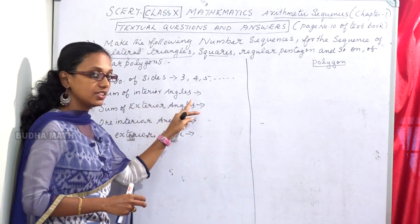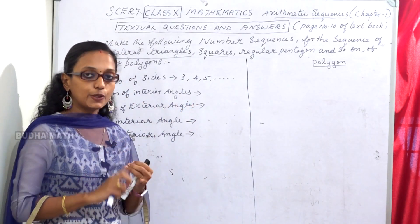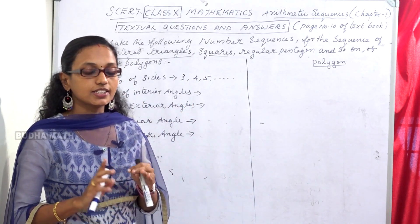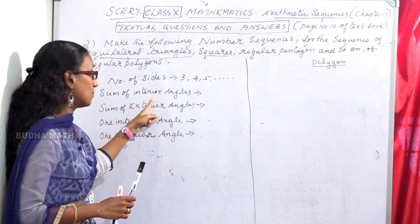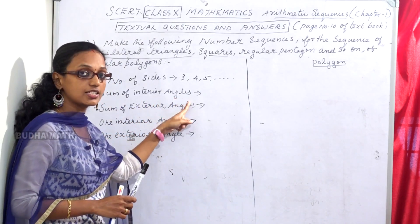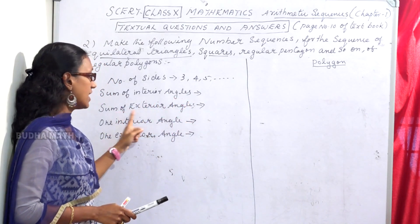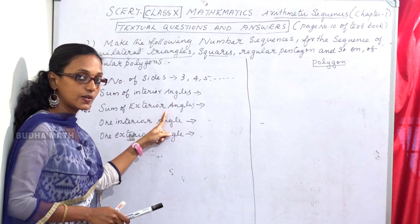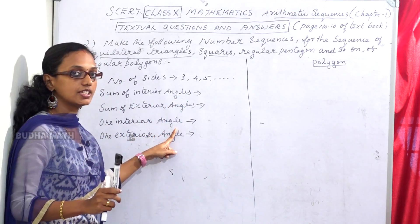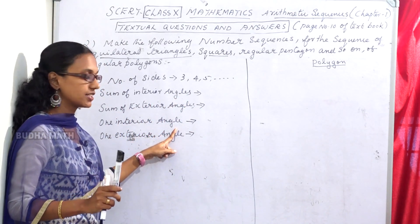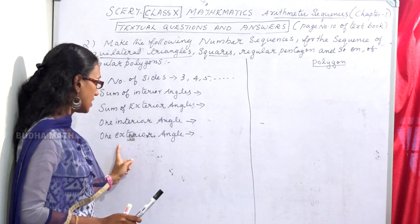Sum of interior angles. Equilateral triangle, squares, regular pentagon — number of sides and sum of interior angles. One interior angle.